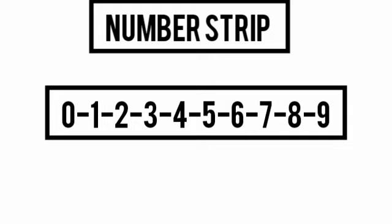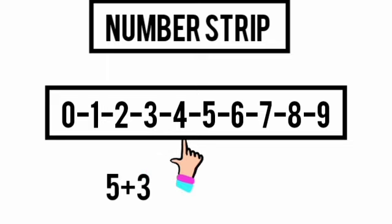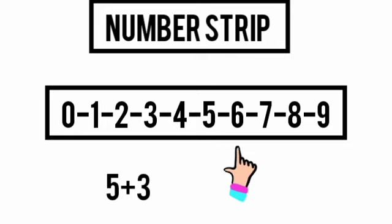To add five and three, first jump five steps from zero: one, two, three, four, five. Then you jump three more steps: one, two, three.